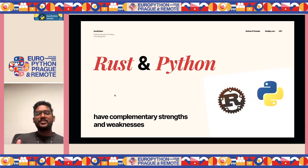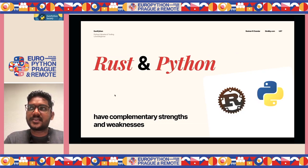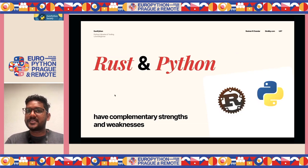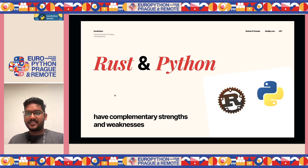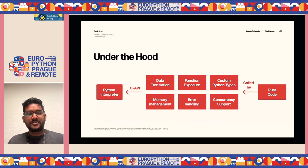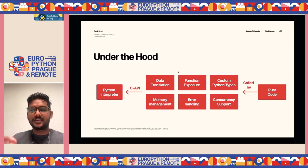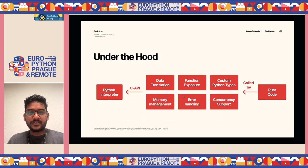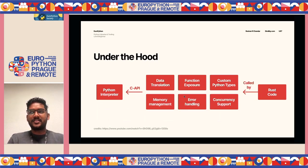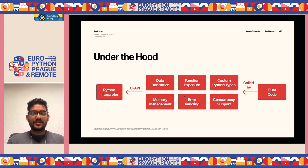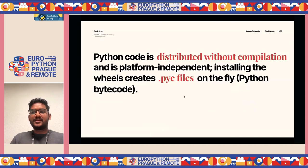Rust and Python have complementary strengths and weaknesses. One language is super easy and fast to write; the other is fast to execute. How do we glue these features together? Using PyO3: you write some Rust code, PyO3 acts as a layer that translates it into something compatible with Python's C API. Python can then interact with pre-compiled Rust code via the C API, giving you the best of both worlds.